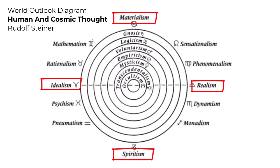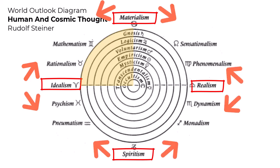There are four major views placed at four corners. The other views are transitions between two of the main views. So between materialism and idealism are transitions to Mathematism and Rationalism. It is the same for the other views, which are transitions between two of the main views.